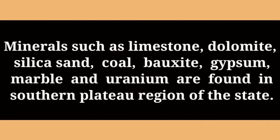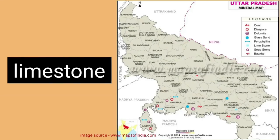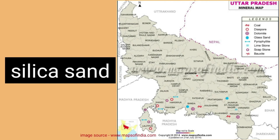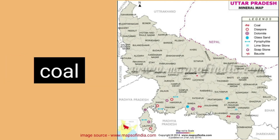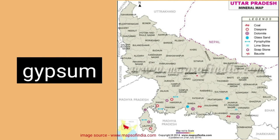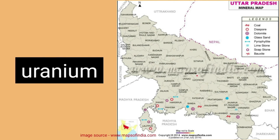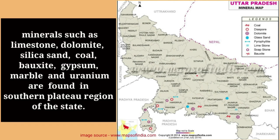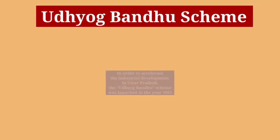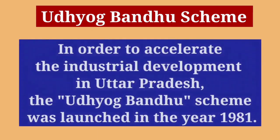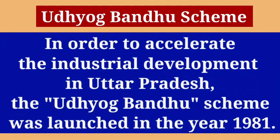The state is not much endowed in terms of mineral resources, but minerals such as limestone, dolomite, silica sand, coal, bauxite, gypsum, marble and uranium are found in the southern plateau region of the state. To accelerate industrial development in UP, a scheme called Udyog Bandhu was launched in the year 1981.